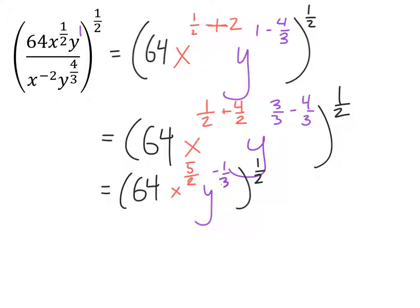From here, I would use the power of a product rule in order to distribute that power of 1 half into the parentheses here. If you don't know, the power of 64 there is 1. So I'm just going to multiply 1 half by each of these exponents.